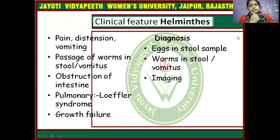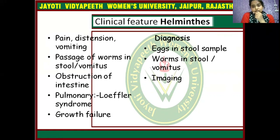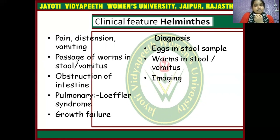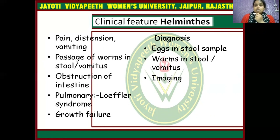The clinical features of helminthiasis include pain and distension, vomiting, passage of worms in the stool and vomitus, and obstruction of the intestine. Intestinal obstruction may occur. Pulmonary Löffler's syndrome is also an important clinical feature — this is often asked in examinations in the context of worm infestation. Growth failure is another clinical feature. Diagnosis is based on finding eggs in a stool sample, worms in stool and vomitus, and imaging, which may also reveal the worm infestation.